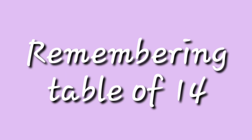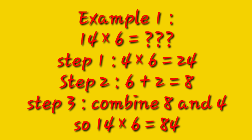Now, the question is how to remember the table of 14 for dodging. You follow the same steps as for tables 12 and 13. Let us take an example — suppose you have to find out 14 times 6. In step 1, multiply 4 by 6: 4 sixes are 24. In step 2, add the multiplier 6 with the tens digit of 24, which is 2: 6 plus 2 equals 8. In step 3, combine 8 and 4, and you get 84. So 14 times 6 equals 84. This is the trick for the table of 14.